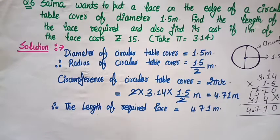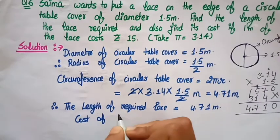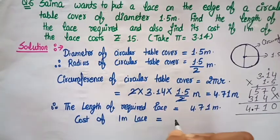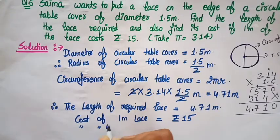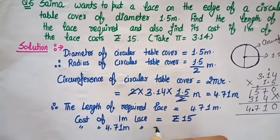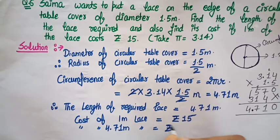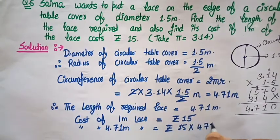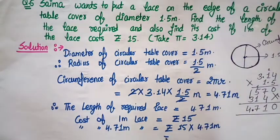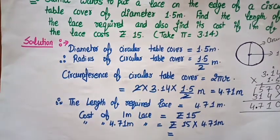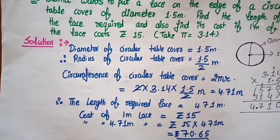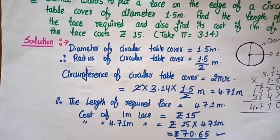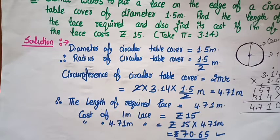So this is our circumference and this is our length of lace required. Therefore the length of lace required is equal to 4.71 meter. Cost of 1 meter lace = rupees 15. So cost of 4.71 meter lace = 15 multiplied by 4.71 = rupees 70.65. This is the cost of lace required to cover the edges of the circular table cover. This concludes question number 6.